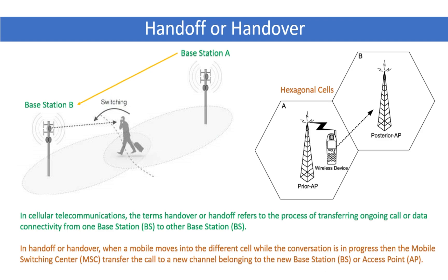The diagram shows that there are two hexagonal cells A and B. The mobile phone is in the prior access point of cell A and then it moves to the posterior access point of cell B. When the mobile user moves from one cell to another, the signal of cell A decreases and the signal of cell B increases. Thus, ongoing call or data connectivity goes on without interruption.